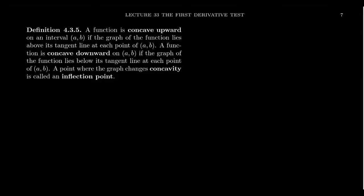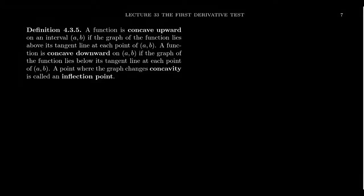Think about this: the first derivative is the rate of change of the original function, and the second derivative is the rate of change of the rate of change. So if we know how quickly the change is happening, that also affects the shape of the graph. This leads to a concept we've seen previously, which we called concavity.